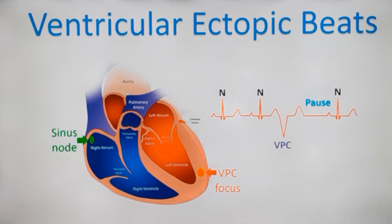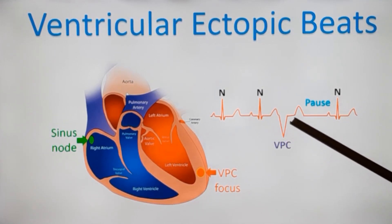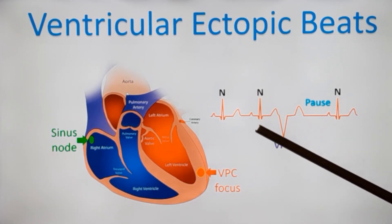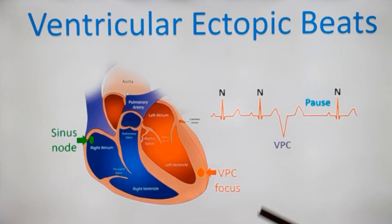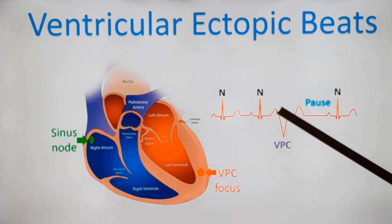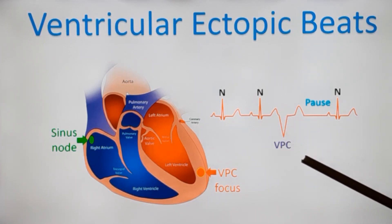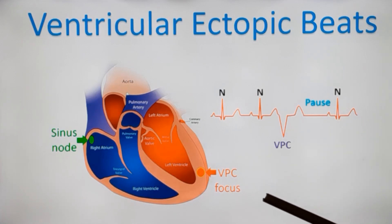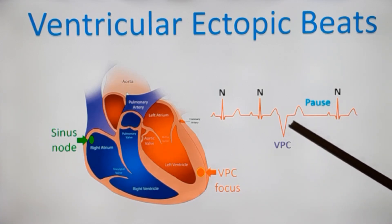How do you recognize ventricular ectopic beats on an ECG? As you can see, it is premature, and the QRS complex is quite different from the normal beat — it's a wide QRS. It is not preceded by a P wave, and it may appear as a QS complex diagrammatically, though any form of QRS abnormality can occur. A wide, bizarre QRS complex not preceded by a P wave and usually followed by a compensatory pause is characteristic of a ventricular ectopic.